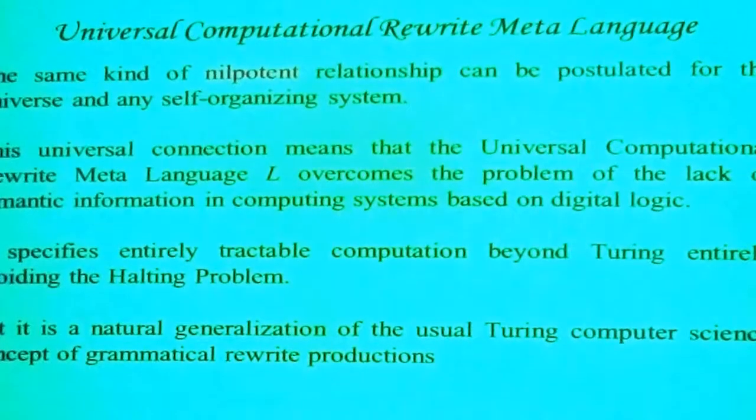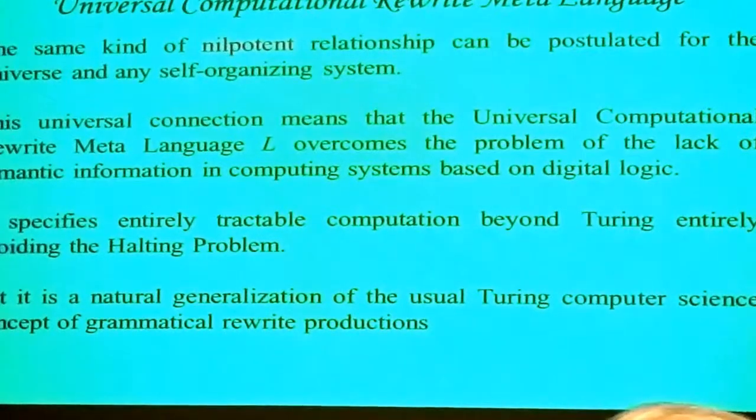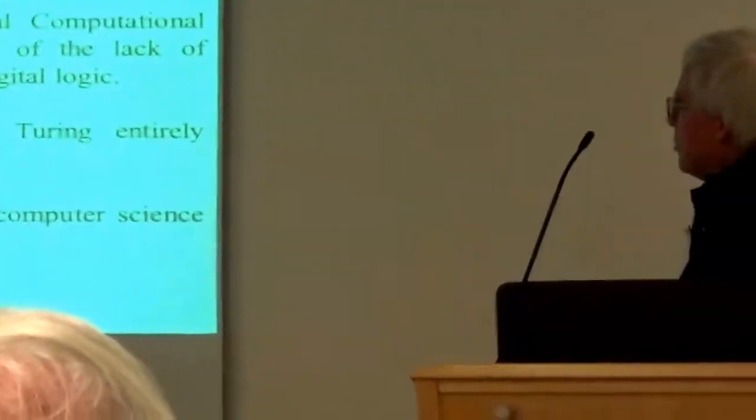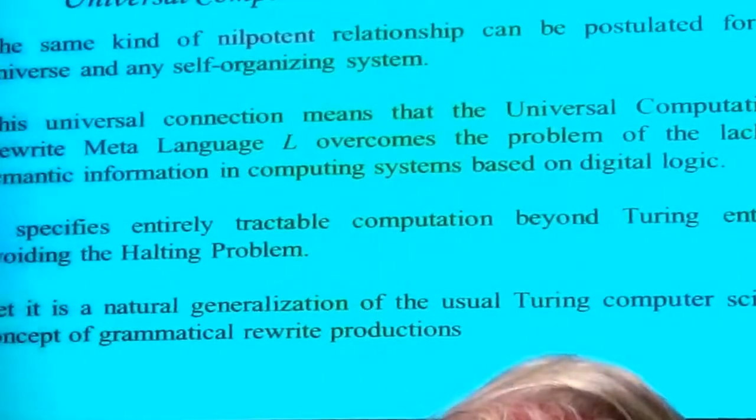A nilpotent relationship with the rest of the universe — a mirror image of our system — can be postulated for the universe in any self-organizing system. We can do that through the energy and momentum because we know that works for any system. The universal connection means the universal computational rewrite meta-language overcomes the problem of a lack of semantic information. Because with digital logic, you're not actually looking at the whole universe — here you are. You can only look at the whole universe; each system determines the rest of the universe as well.